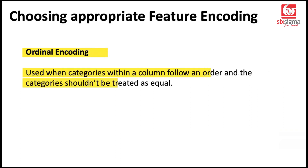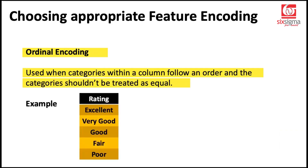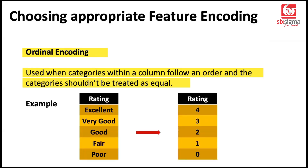There could be times when we actually have an order in the features, like some kind of ratings, and we want to retain that order. For example, ratings ranging from poor to excellent — if we do one-hot encoding, it may lose the sense of order. So we use ordinal encoding. In Python, indexing generally starts from zero, so you can give ratings from zero to four for five levels. This is called ordinal encoding.